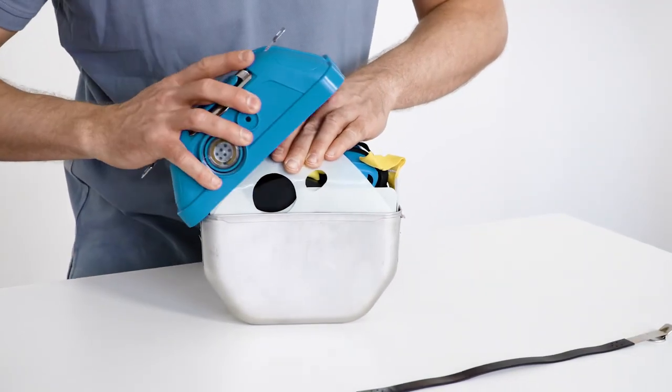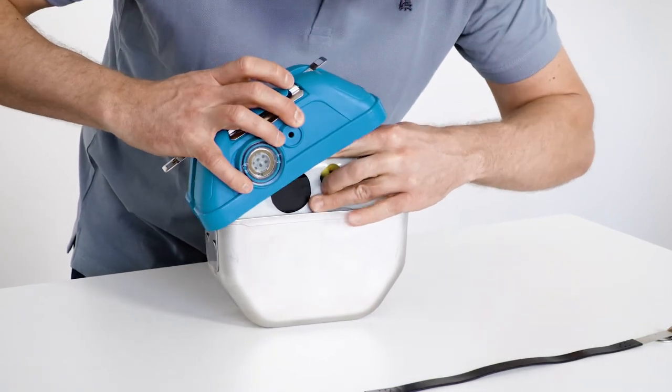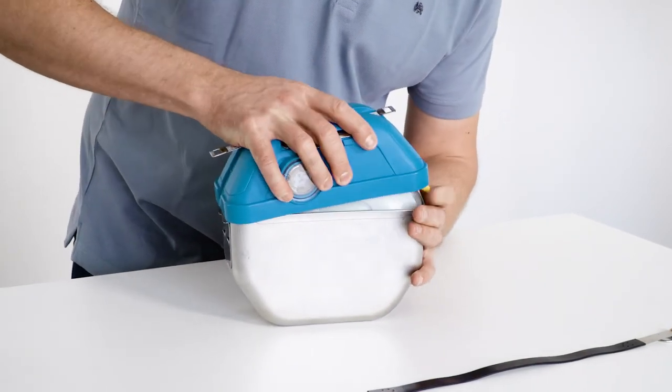Place the upper part of the housing on the lower part of the housing. The indicator window should point towards the opening in the packing aid.